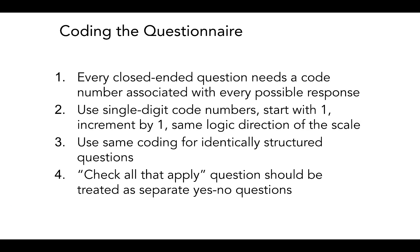So these are the basic coding rules, really. This is all you need to know. Every closed-ended question needs a code number associated with every possible response. Always use single-digit code numbers at the beginning. Start with one, increment by one, and use the same logic direction of the scale, so increasing. Also use the same coding for identically structured questions. So if you have multiple questions that look the same, always start again by one, increment by one, so use that same coding structure. And then those check all that apply questions should be treated as separate yes or no questions. So every answer option should be treated as a separate yes or no.